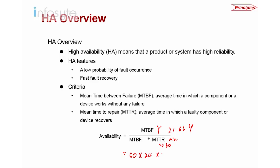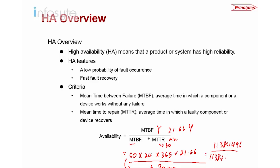We calculate: 60 minutes × 24 hours × 365 days × 21.66 years, giving us 11,384,496 minutes. Dividing by (11,384,496 + 30), the percentage of availability is 99.999736%. This is the availability for the NE40E x16. This is just an estimation, but it's very important to achieve high availability — especially in telco, where they need at least five nines.